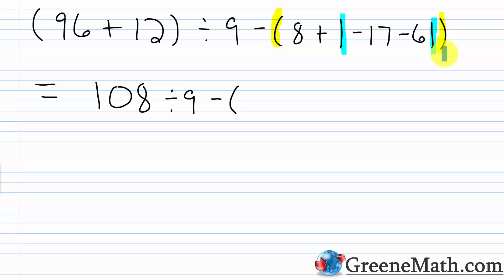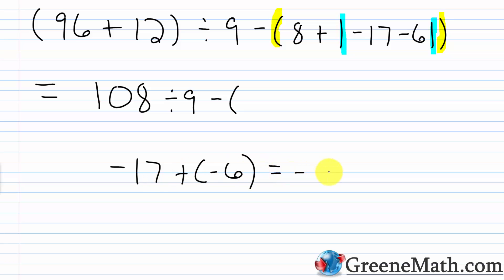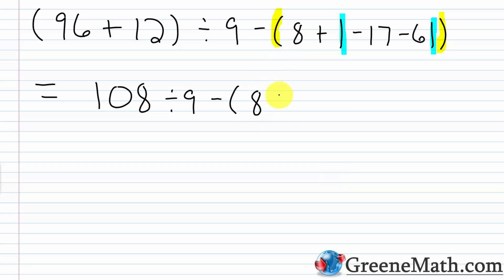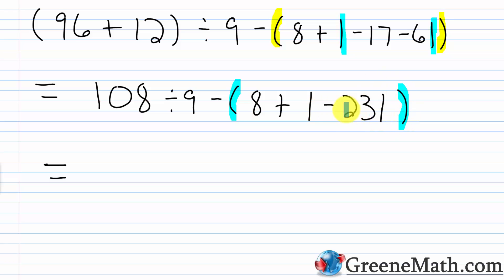Negative 17 minus 6 is the same thing as negative 17 plus negative 6. The answer would be negative — we have a common sign — and then you just do 17 plus 6, and that's 23. So this would be negative 23. Let's write this as 8 plus the absolute value of negative 23. We need to figure out what the absolute value of negative 23 is first before we can add to 8. The absolute value of negative 23 is 23.